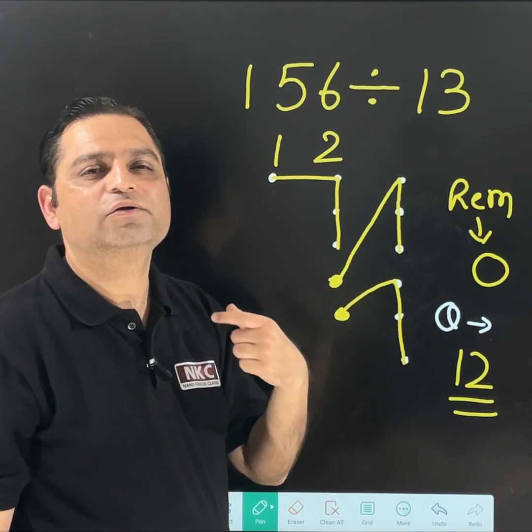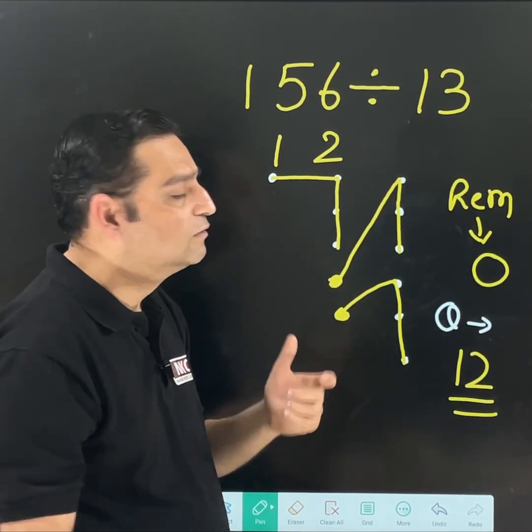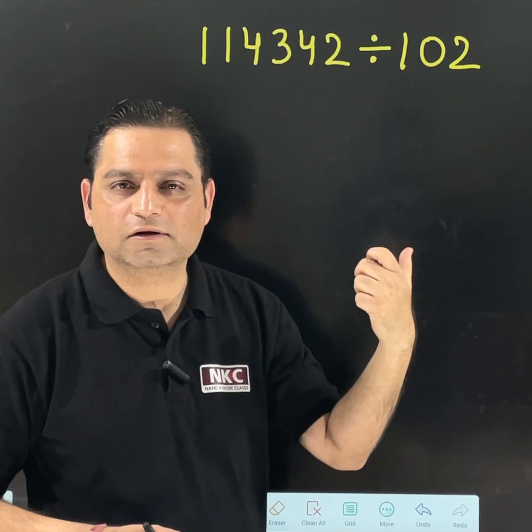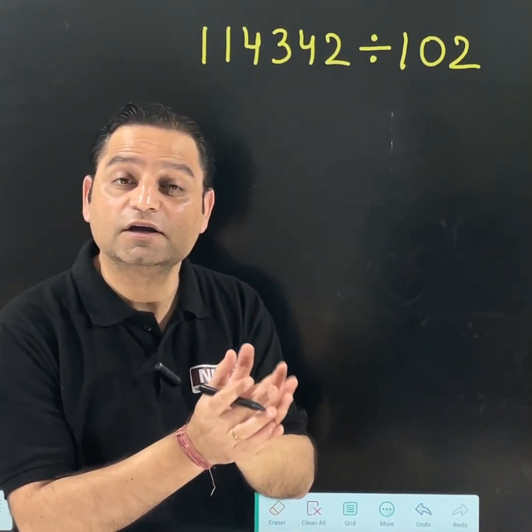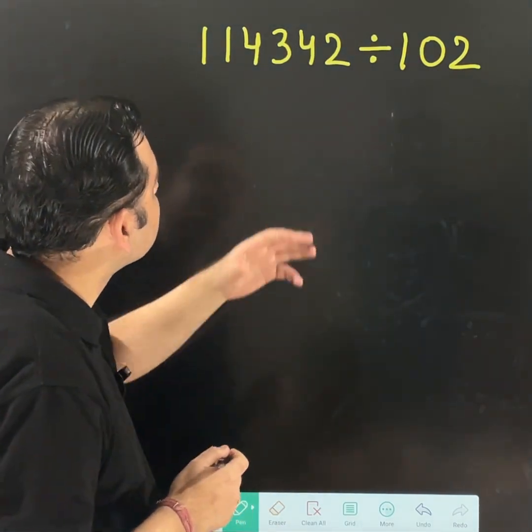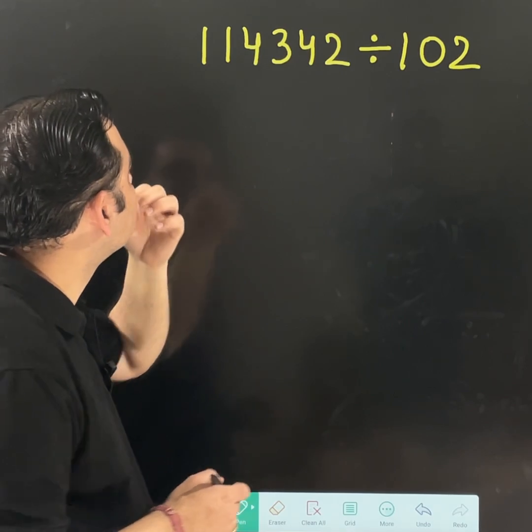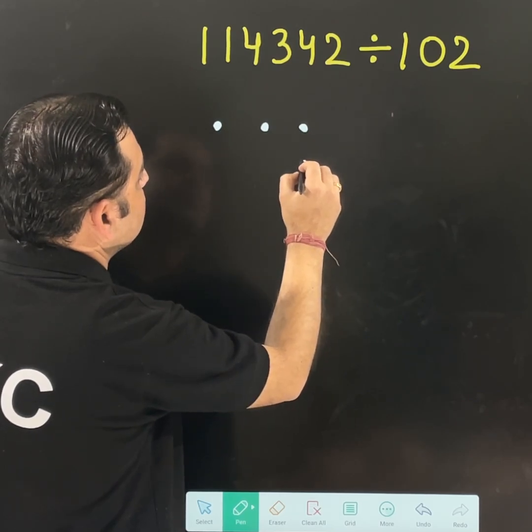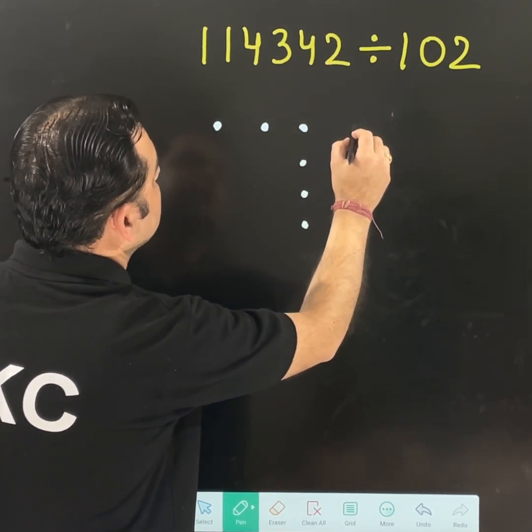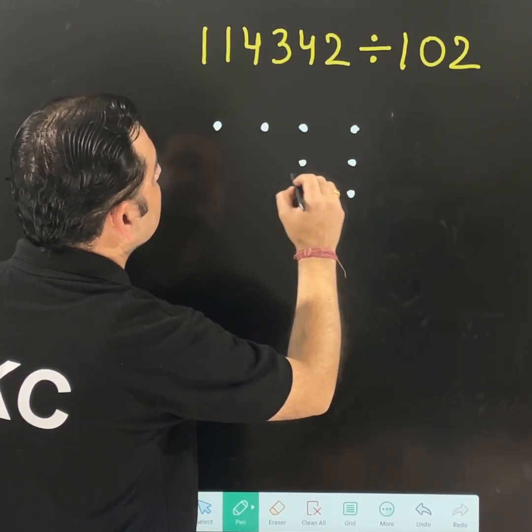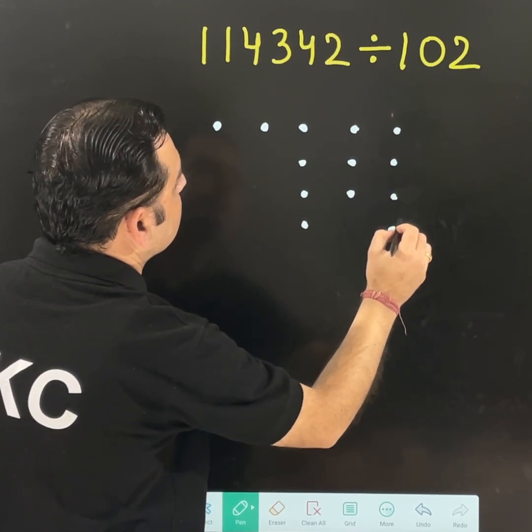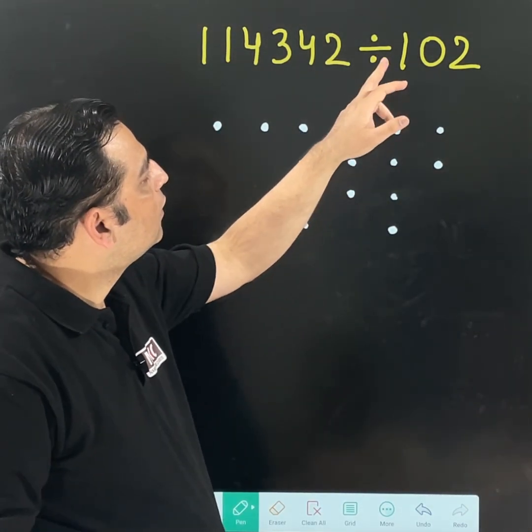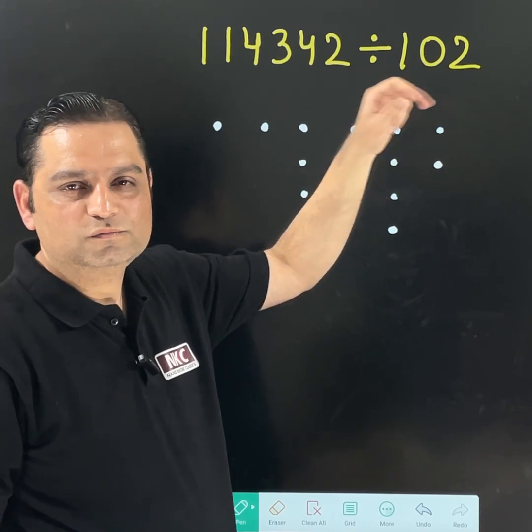But this is not the end. We are going to cover many questions. So, let us start next question now. Read the statement. Now, this question is different than other. It seems to be difficult, but you will find it very easy and interesting as well. Let us start marking the dots according to the same rule we studied. 1, 1, 4, 3, 4, 2. 1, 1, 4 dots. 3 means 3 dots. Then again 4. Then 2 dots. I have made all the things. Dots are marked.